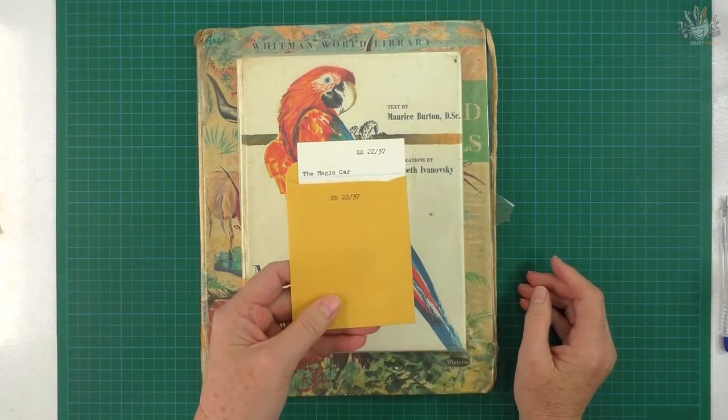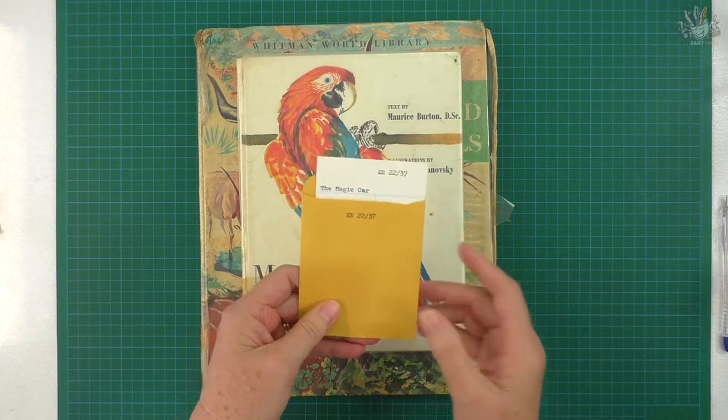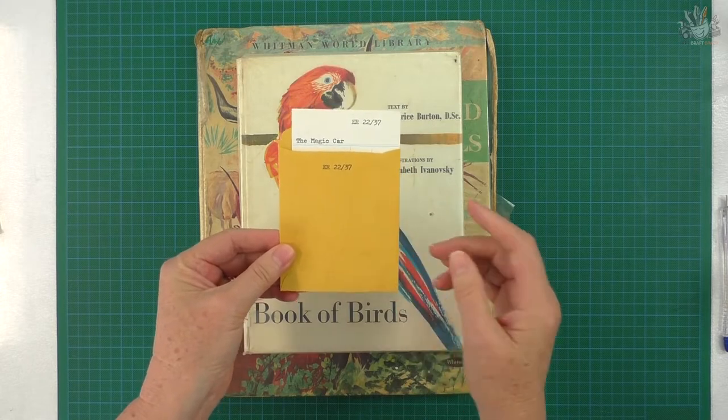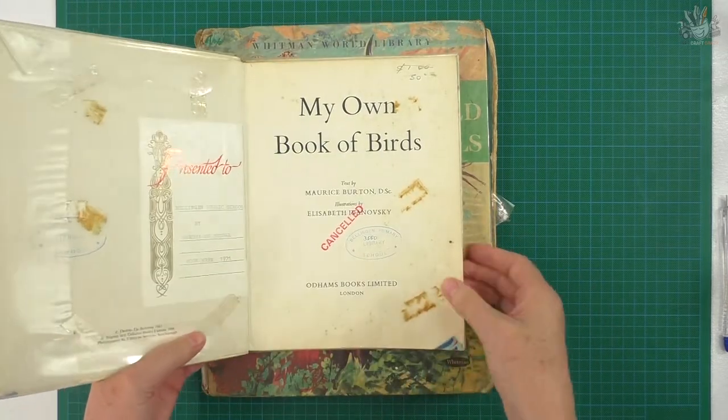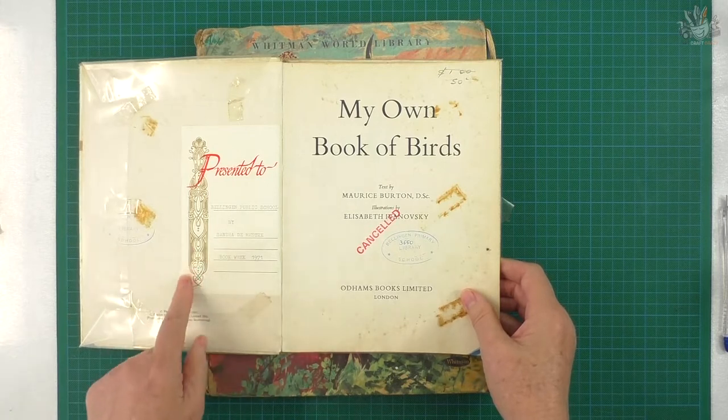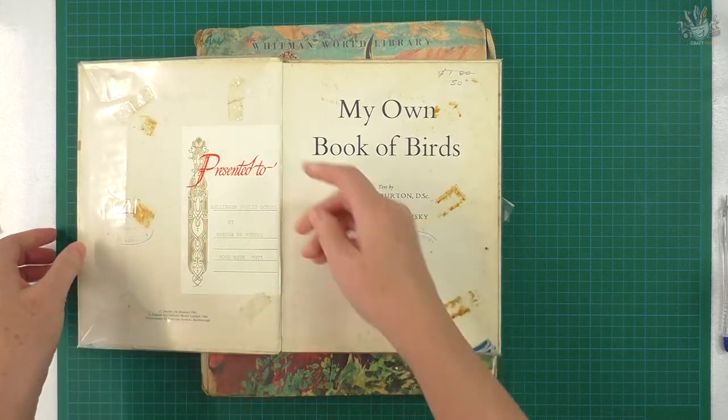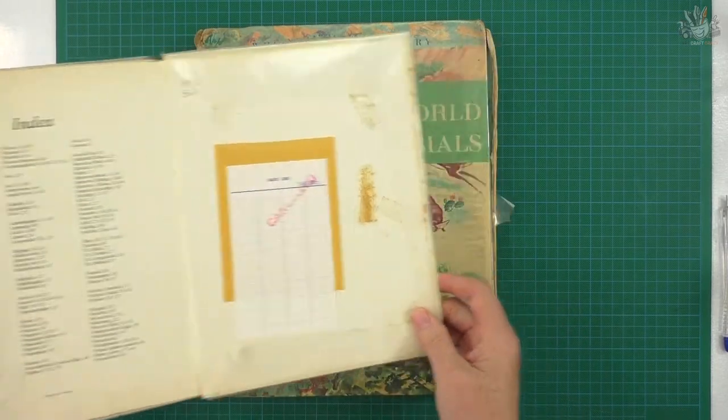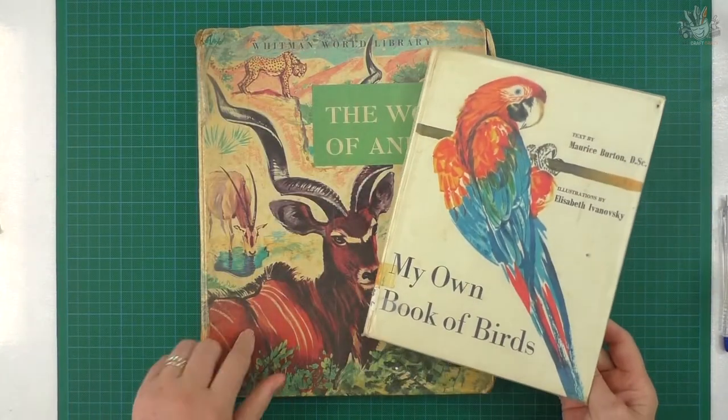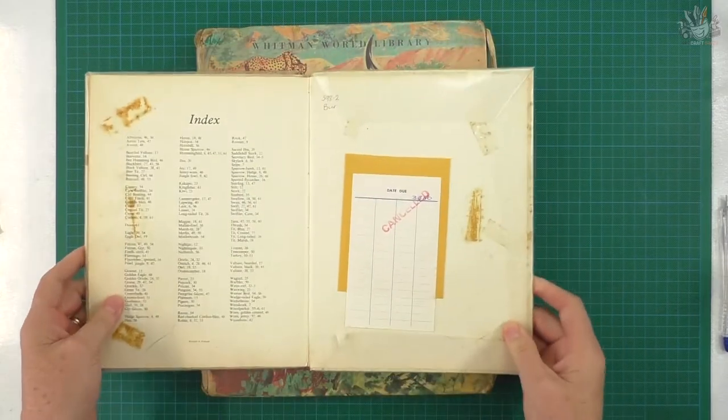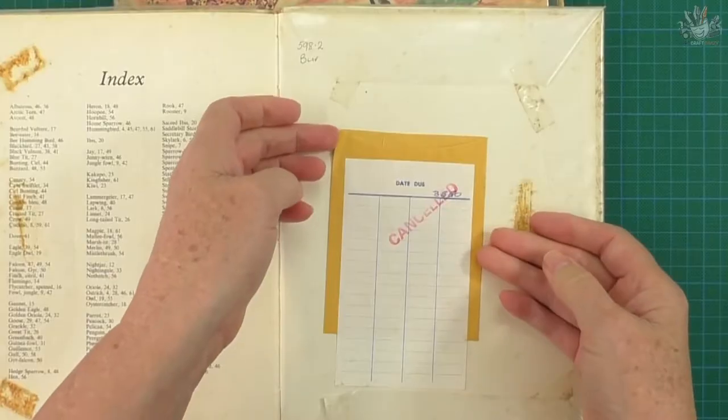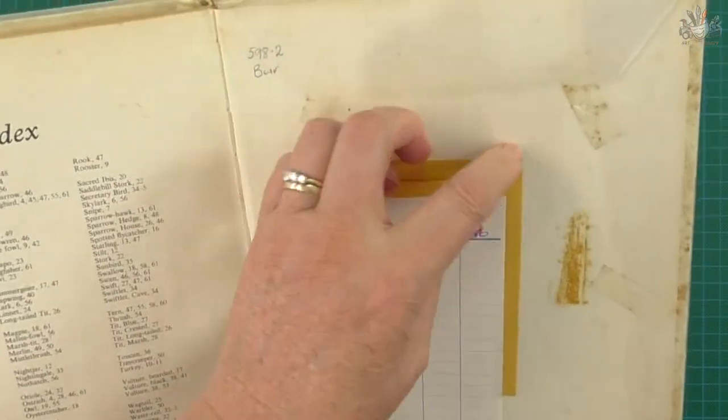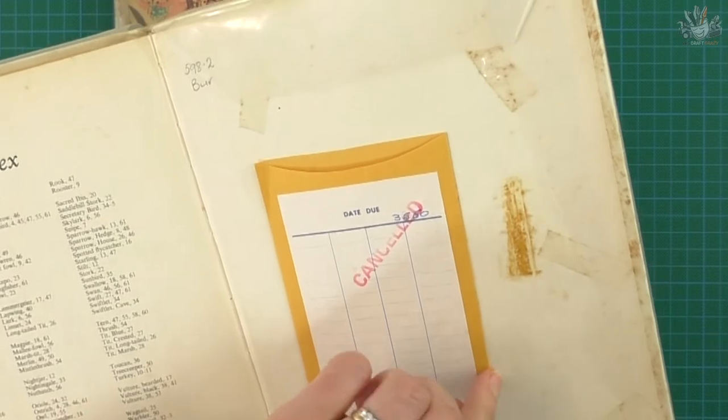So I'll show you how I got this off without damaging the little envelope. Now here's an example. I'm going to actually even try to get this sticker off as well. This book was in my mum's things and this one here has just got a tiny little bit, just that tiny little bit there and that's glued right down there.